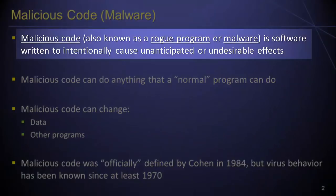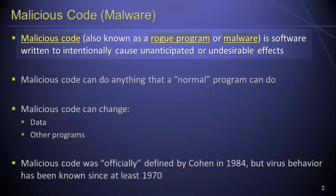To begin with a definition, malicious code is software that is written for the purpose of intentionally causing some sort of unanticipated or undesirable effects. Note that the terms malicious code, rogue program, and malware all refer to the same underlying concept, and I will hence use these terms interchangeably.